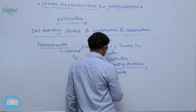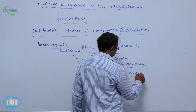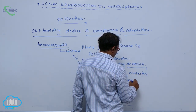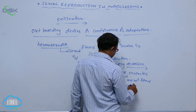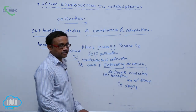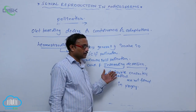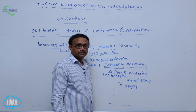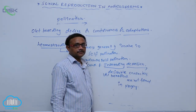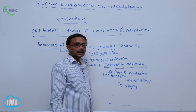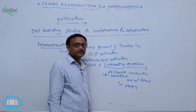It means beneficial characters are not formed in the progeny of the plants. So it means different varieties of plants are not formed by continuous self-pollination. That's why, for the prevention of self-pollination, plants show some adaptations.